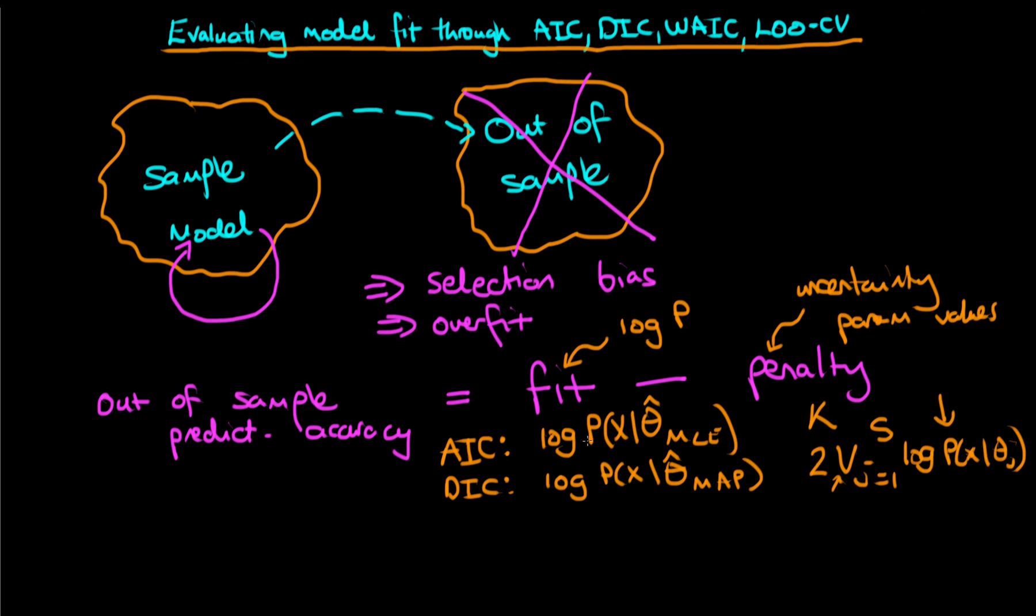Both AIC and DIC use a measure of fit which is essentially evaluated at a point estimate of the parameter value. What we would prefer is a measure of fit which took account of the uncertainty in the value of theta. And that's exactly what WAIC does. So WAIC is a bit different. What it does is it takes the sum over all data points in your sample, the sum from i equals 1 to n, of the log of the average value of the likelihood P of Xi given theta J. Notice I've got an Xi here because we are summing the contributions from each of the individual points in our data. This second term essentially measures the average fit of the model across all of our posterior uncertainty, across all of our draws of theta from the posterior.